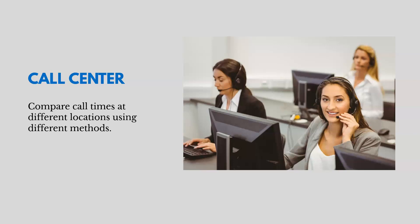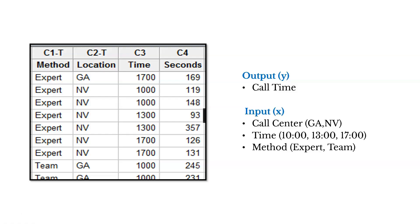Now let's look at a call center. We compare call center times at different locations using different methods — and this is where we really see the different classes of variation: within unit, between unit, and temporal. Our output is call time, which we want to minimize so more calls are answered, customers spend less time waiting, and fewer customers leave without getting an answer. Our inputs include two call center locations — Georgia and Nevada — three times of day — 10, 13, and 17 — and two methods for answering calls: an expert method and a team method.